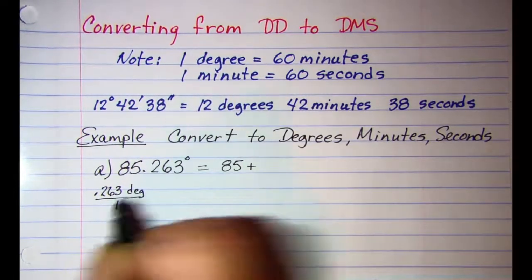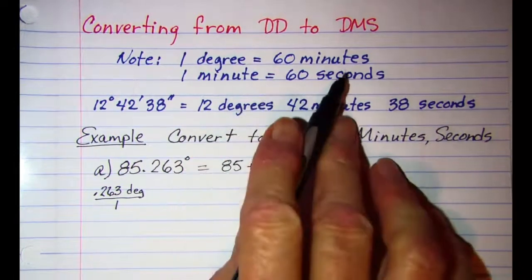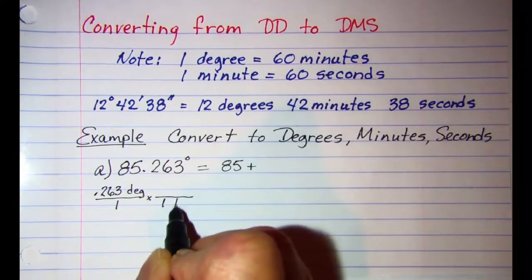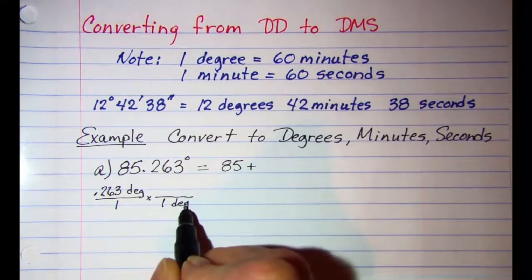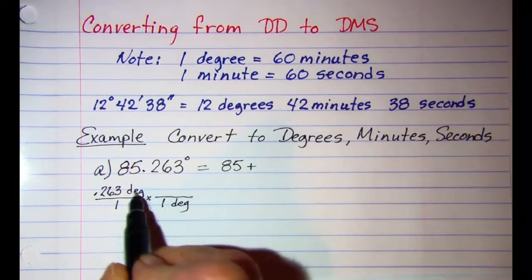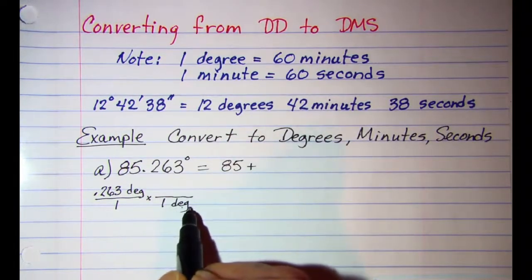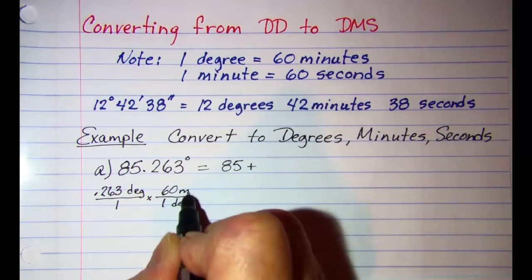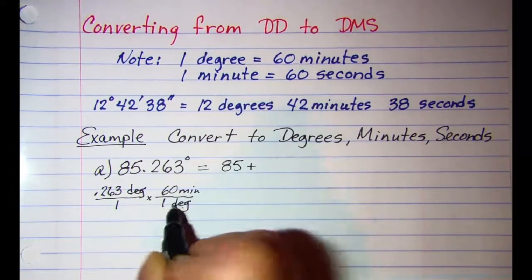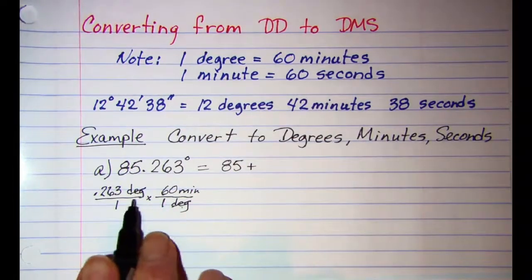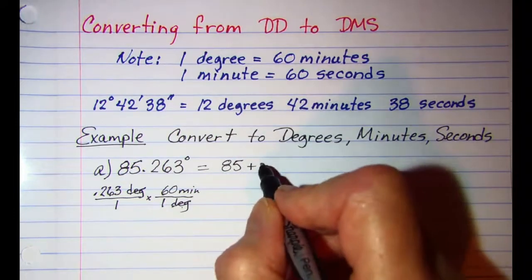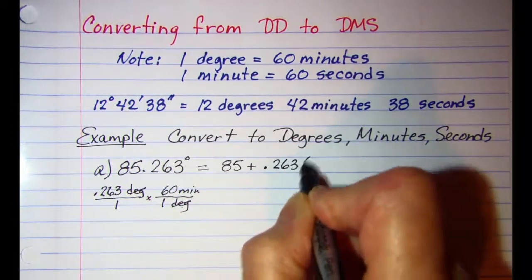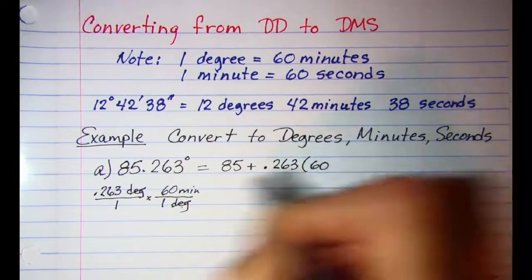To my next smaller unit, which is minutes, I know that 1 degree, and I put the 1 degree in the denominator, so that I can cancel these degree units off, 1 degree is 60 minutes. So now I can cancel my degrees off, and I can see then that 0.263 times 60 will be in minutes.